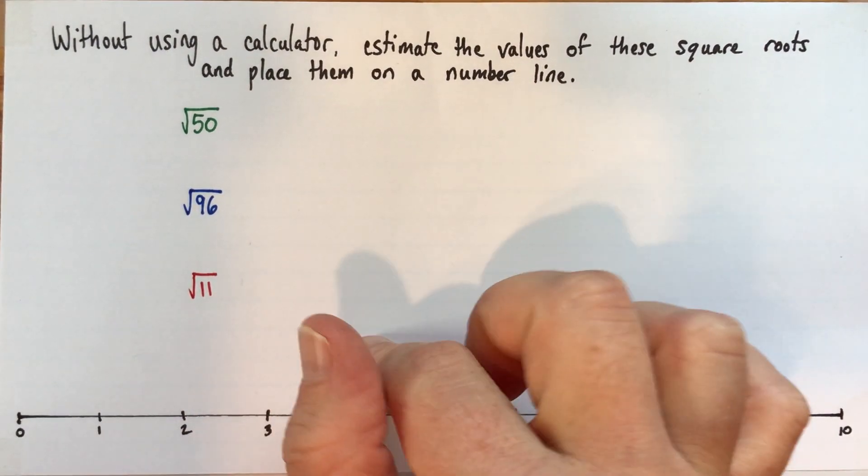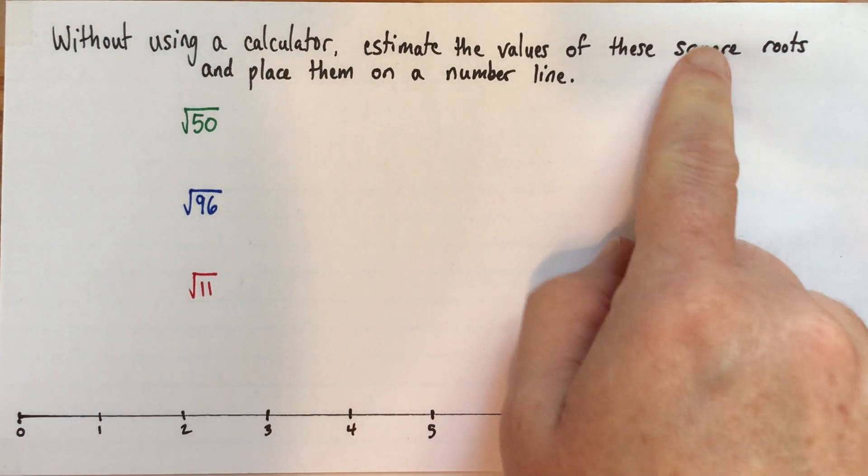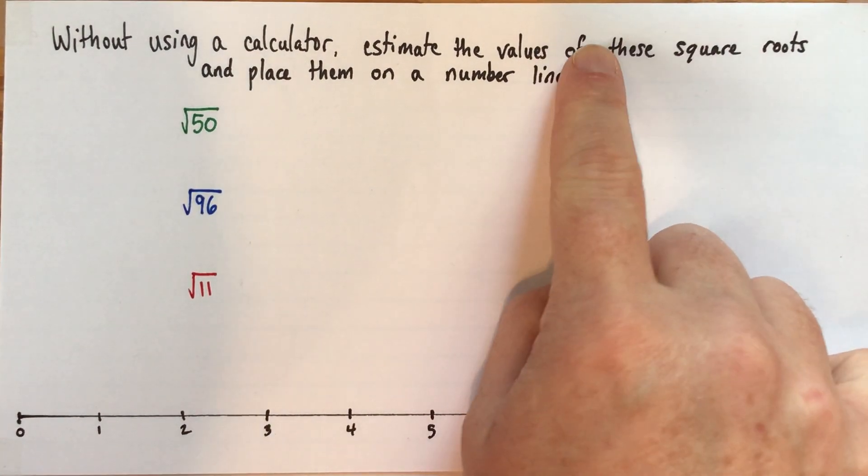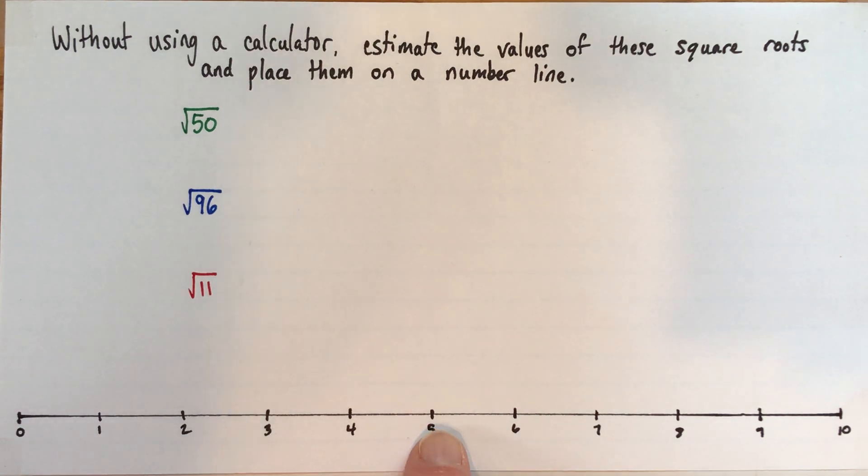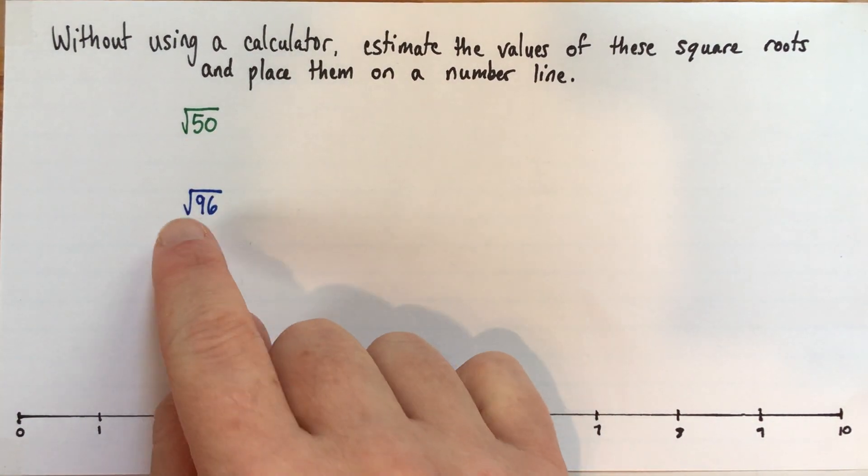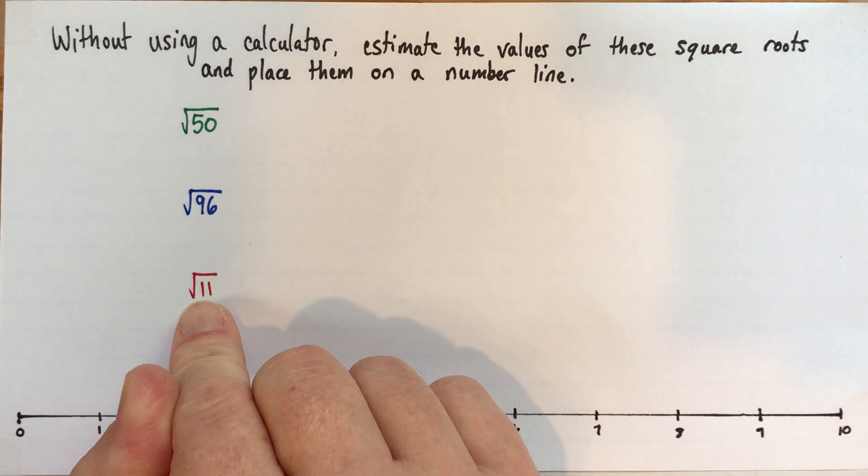And we'll actually sort of do those at the same time, because the number line will help us think of what values are reasonable, and thinking about what values helps us place them on the number line. So our square roots are the square root of 50, the square root of 96, and the square root of 11.